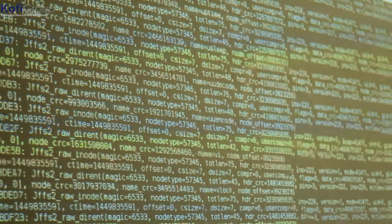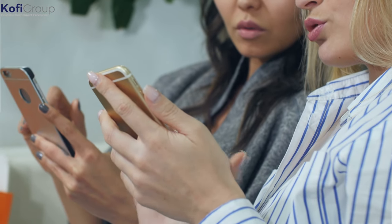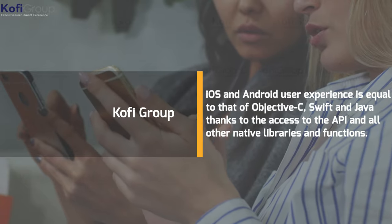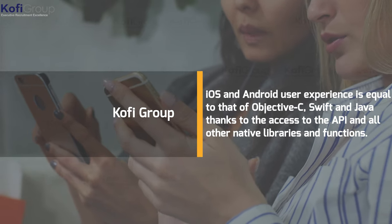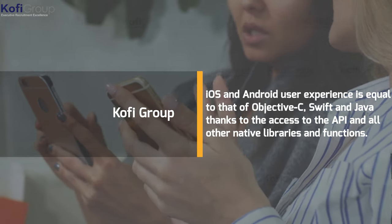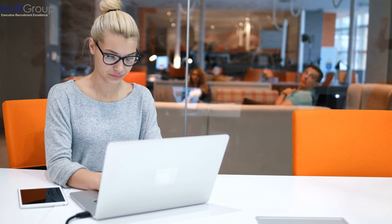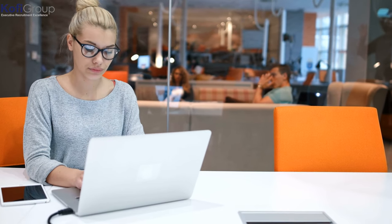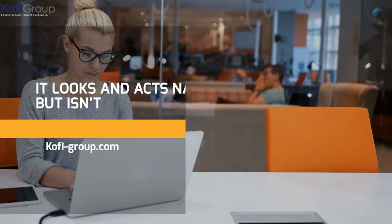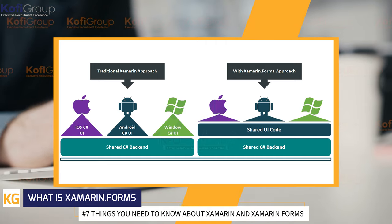How Xamarin works: it uses the singular C# language paired with native libraries, all wrapped within the .NET cocoon. In this way, iOS and Android user experience is equal to that of Objective-C, Swift, and Java, thanks to access to the API and all other native libraries and functions. All the code relevant to business logic, database access, and communication across the network is then shared across all the platforms in an umbrella user interface code layer. When it comes time to building the actual user interface, the native code is drawn upon so that it looks and acts native — but isn't.